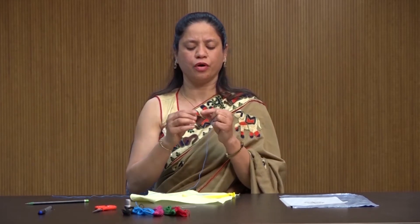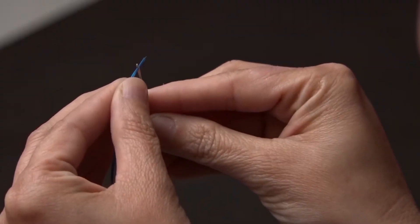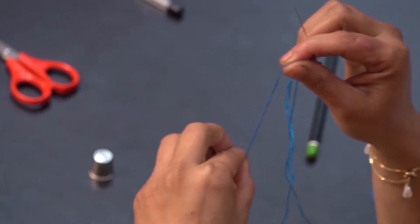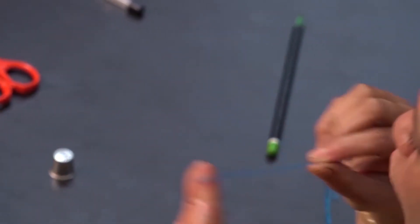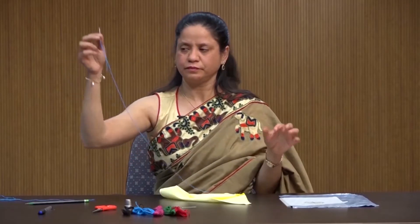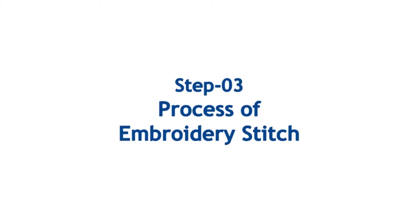Make a small knot at the end of the thread, at one end only. Let's start the satin stitch.